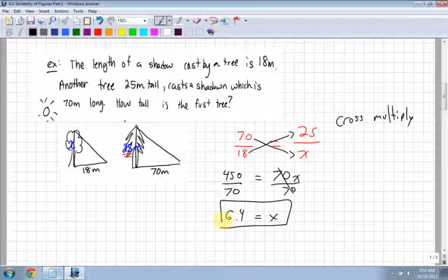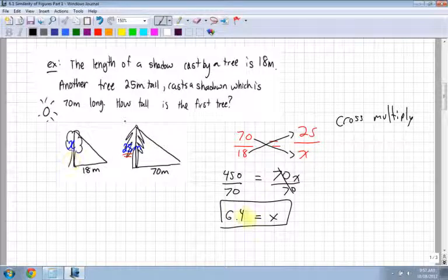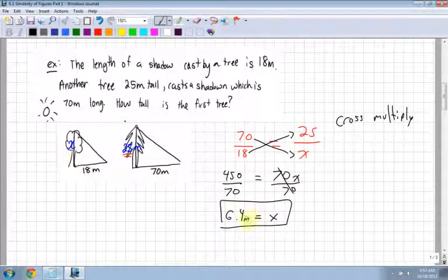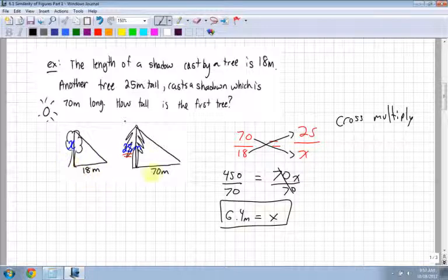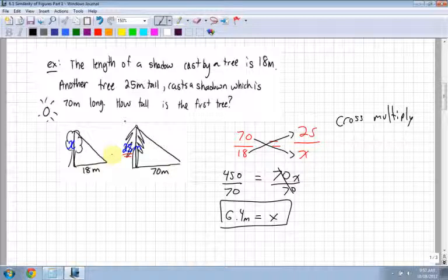Check to make sure it makes sense. Does it make sense? That's a big key issue in this whole course. I look at the height of the tree, 6.4 meters. The shadow was a lot smaller from 70 meters to 18, that's a lot smaller. So from 25 meters to 6, yeah, that makes sense, because it's a lot smaller than 25.